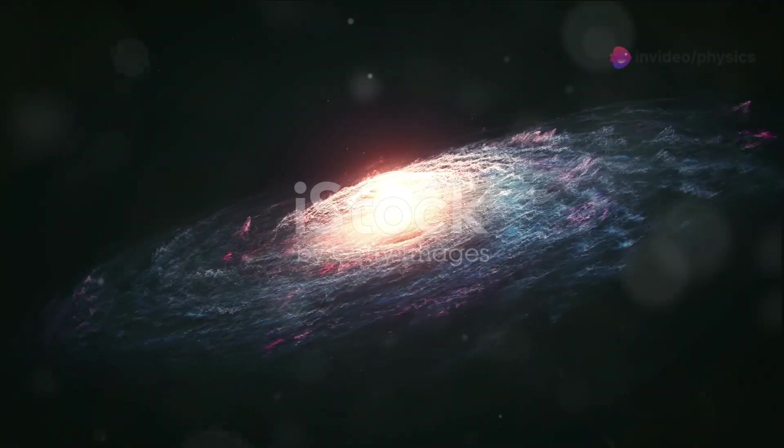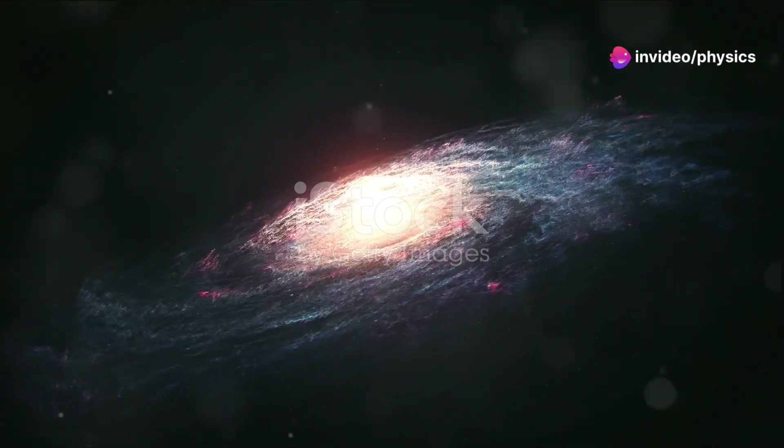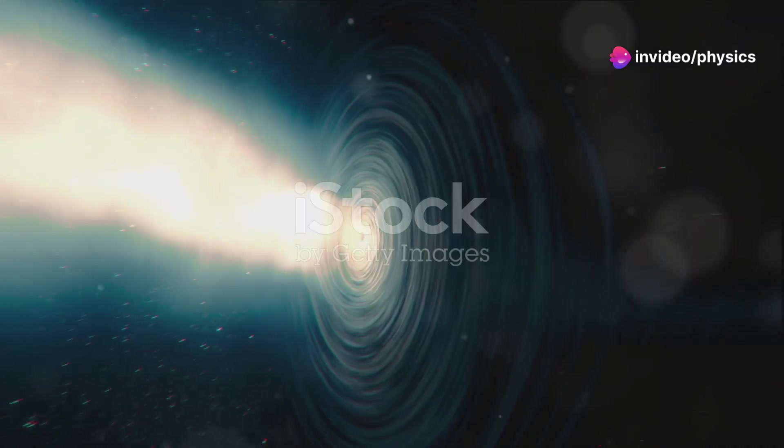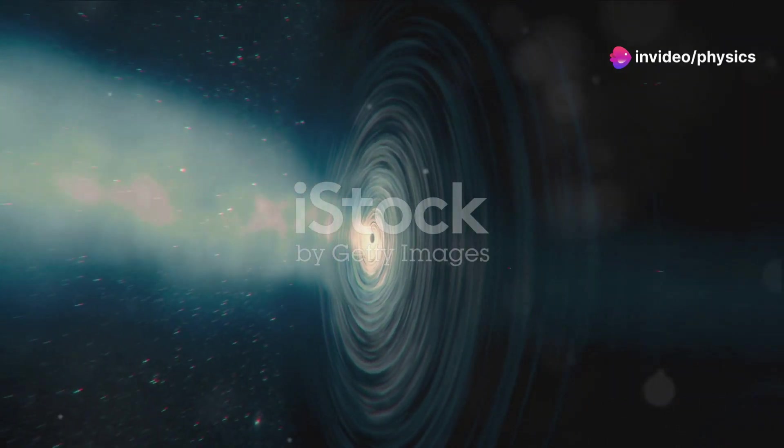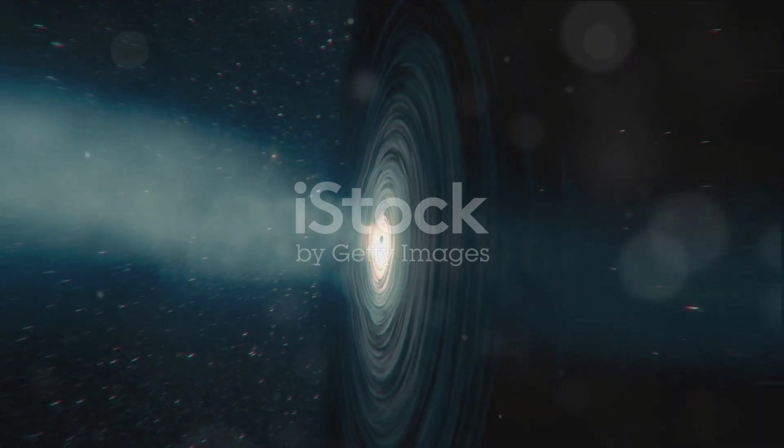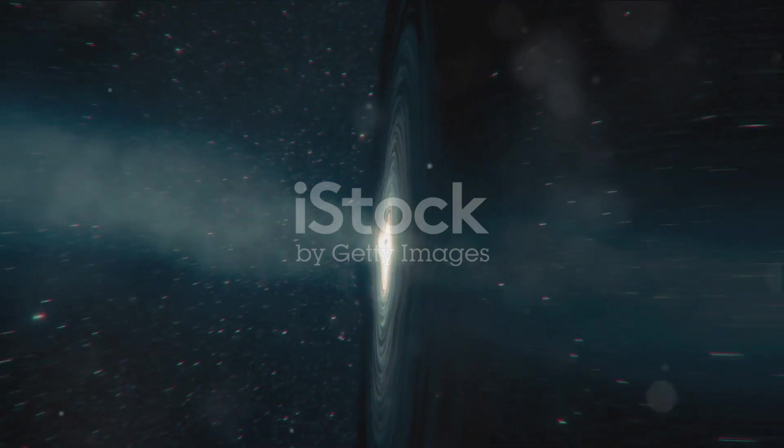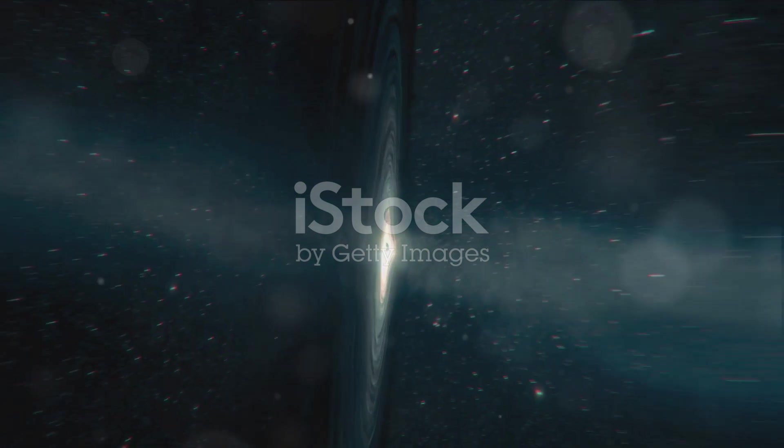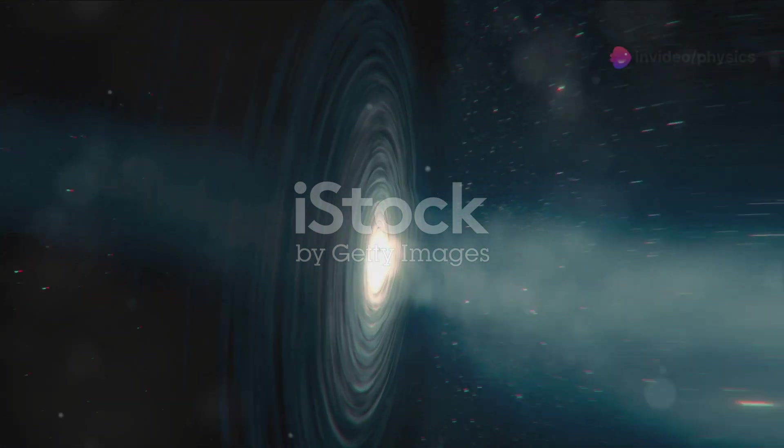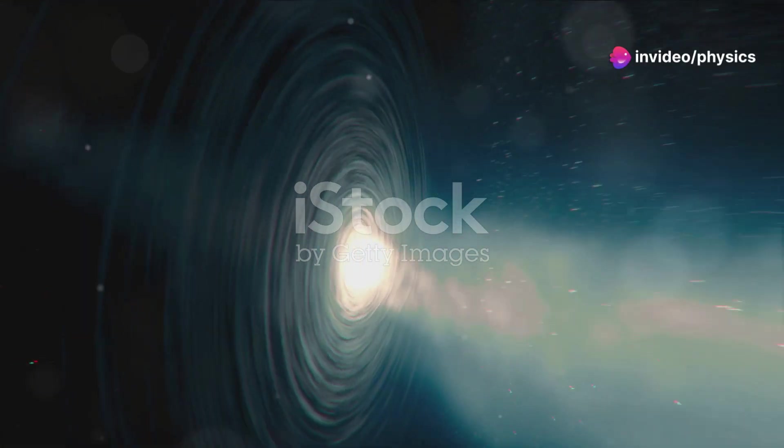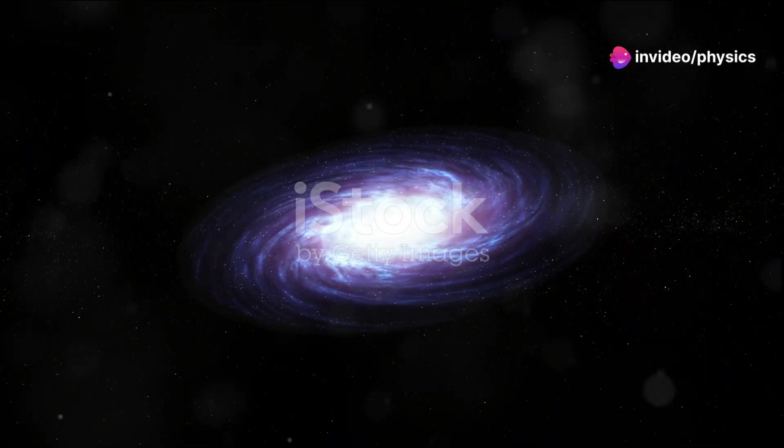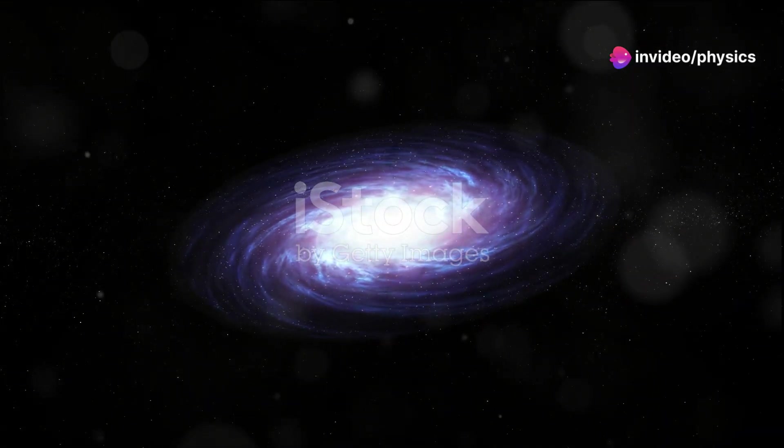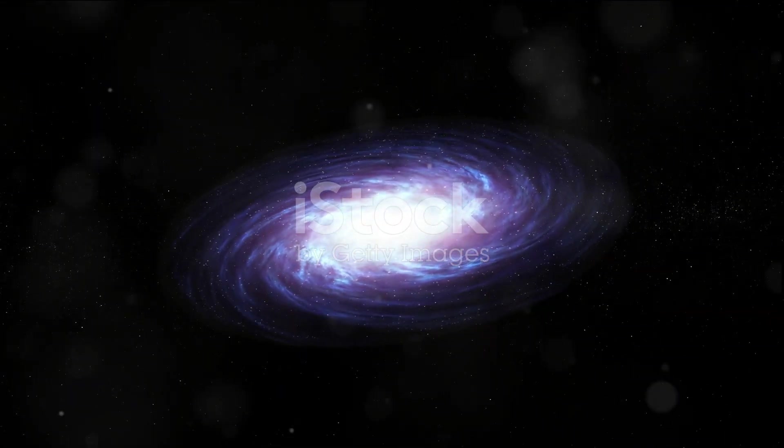Phoenix A isn't just any galaxy. It's a radio galaxy known for its tremendous emissions across radio frequencies, a beacon of astronomical energy powered by a supermassive black hole at its center. On the other hand, Ton 618 is a behemoth among black holes, a supermassive black hole so massive it's hard to fathom. Its gravitational pull is so strong that not even light can escape its grip.